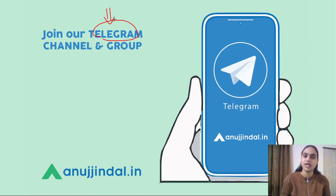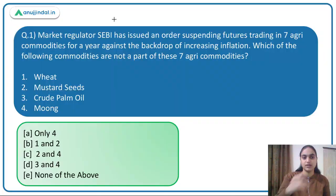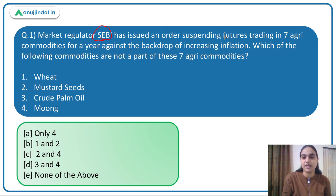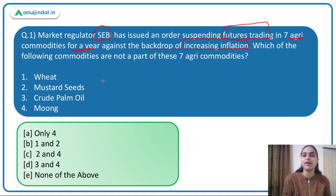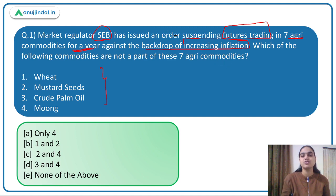Moving on to the first question: market regulator SEBI has issued an order suspending futures trading in seven agri commodities for a year, against the backdrop of increasing inflation. Which of the following commodities is NOT a part of these seven agri commodities? Recently we have seen that the inflation is rising significantly.